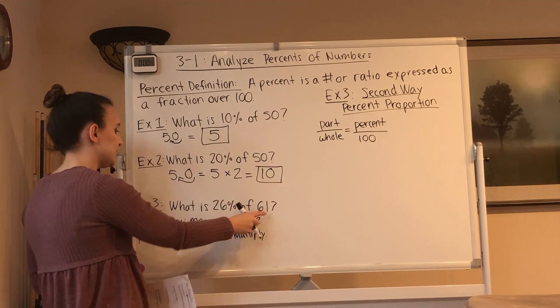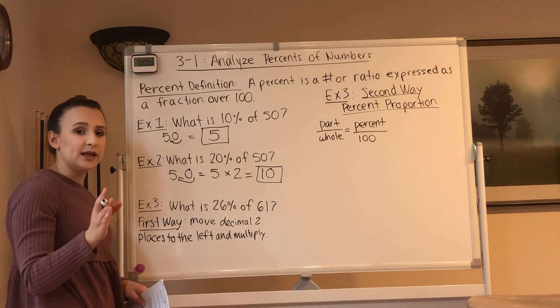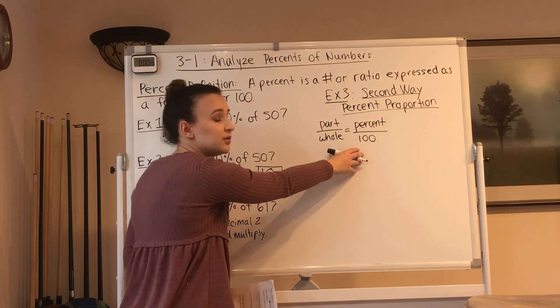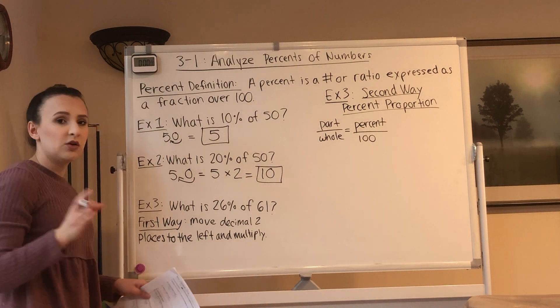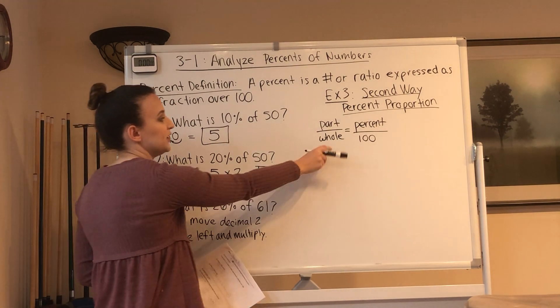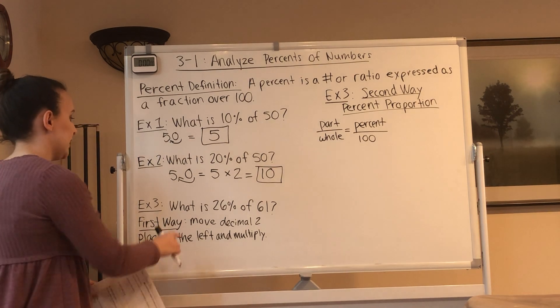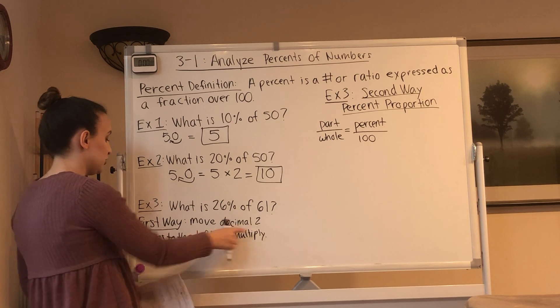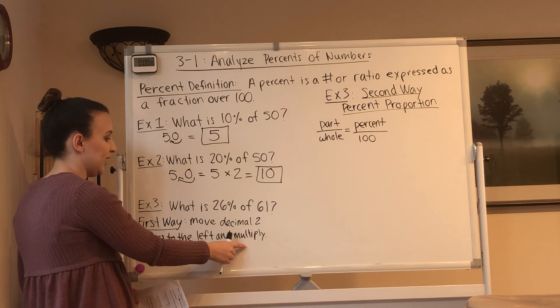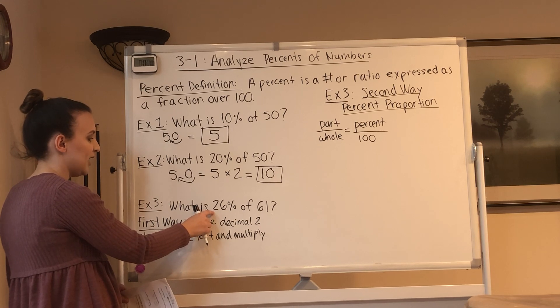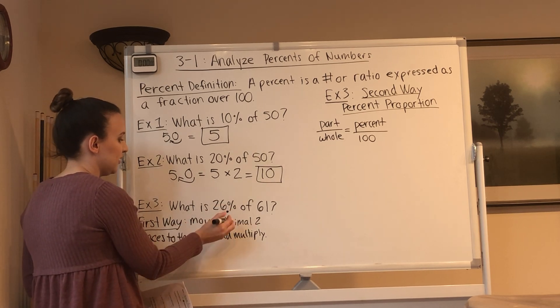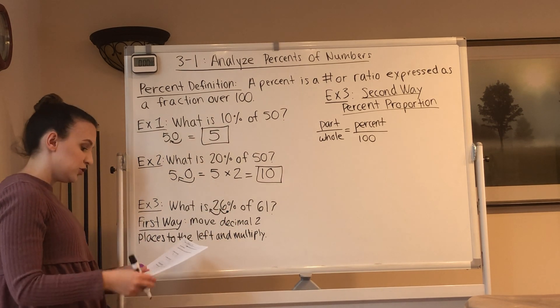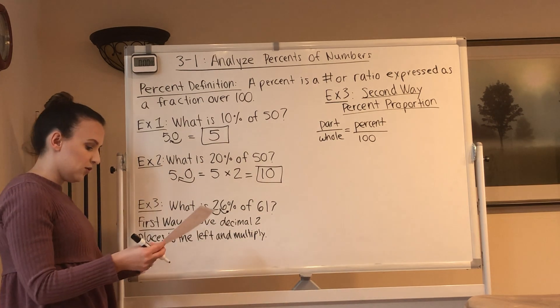Next. What is 26% of 61? There's two ways of doing this. This way should be review from 6th grade math. This way is going to be somewhat new to you. We have to learn it both ways because tomorrow you're going to be doing it this way. So what is 26% of 61? The first way is we can move the decimal two places to the left and multiply. So we can move this decimal two places to the left and then multiply. So for 26%, we can move the decimal 1, 2, that gives us 0.26, and we can multiply by 61.